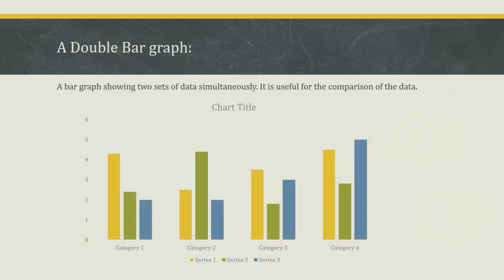A double bar graph is a bar graph showing two sets of data simultaneously. It is useful for the comparison of data.